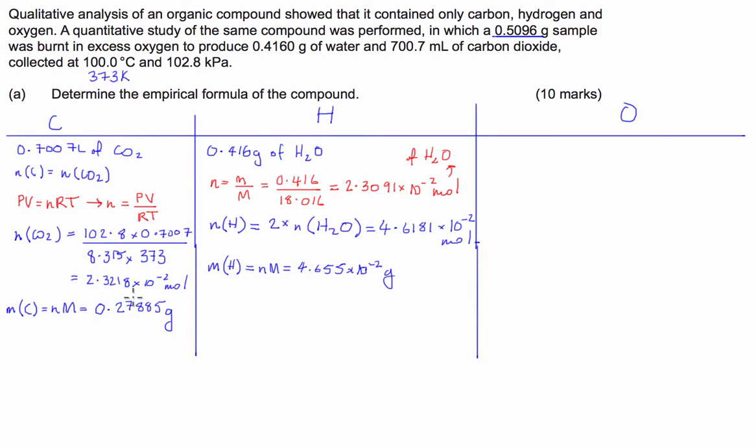That's the carbon done, the hydrogen done, now let's get stuck into the oxygen. The mass of oxygen in this molecule is equal to the mass of the total molecule, so 0.5096, subtract the mass of carbon, subtract the mass of hydrogen. What we get is 0.5096 subtract 4.655 times 10 to the negative 2 subtract 0.27885 and we get 0.18423 grams.